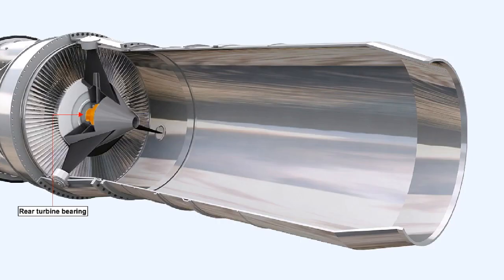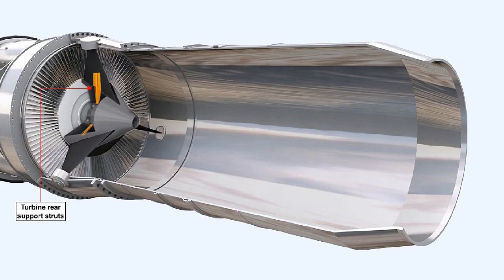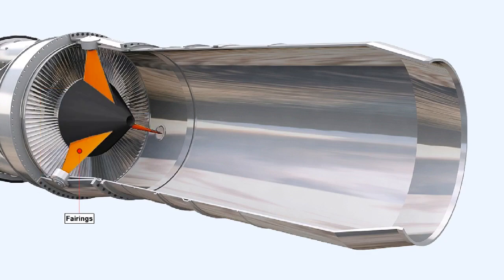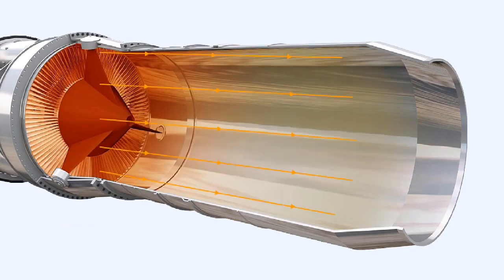The rear turbine bearing is also supported inside the exhaust cone via turbine rear support struts, which are streamlined by fairings. The fairings also straighten out any residual whirl which may exist in the gas stream as it exits the turbine. This residual whirl would cause additional losses through generating turbulence if it was allowed to pass into the jet pipe.